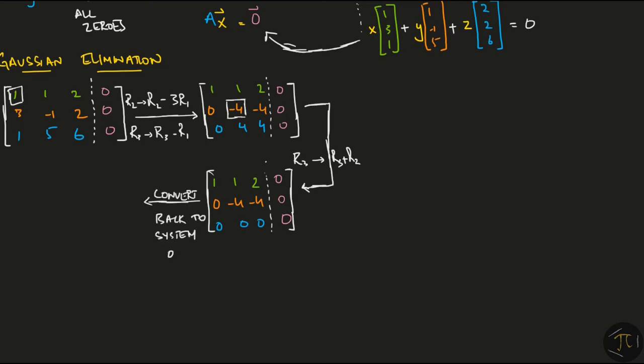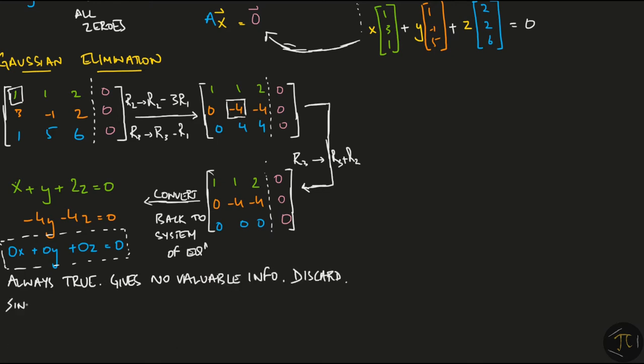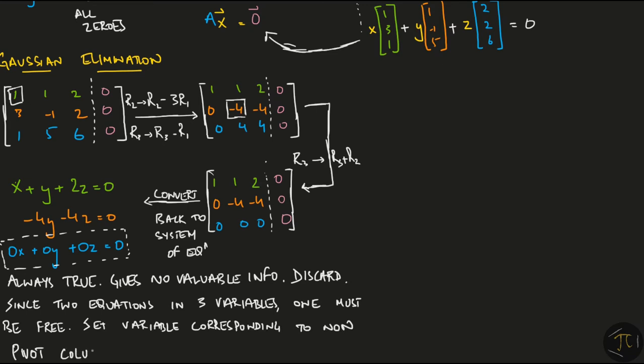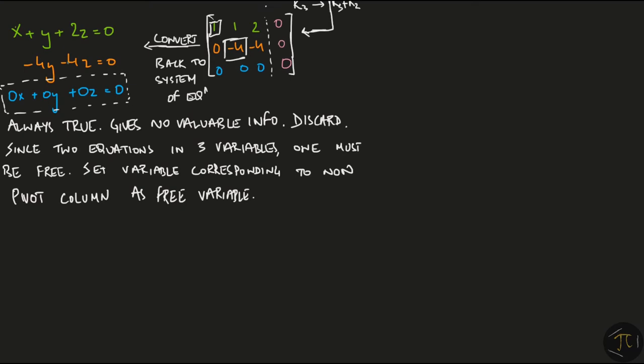Now convert back to the system of equations which gives us x plus y plus 2z equal to 0, minus 4y minus 4z equal to 0, and 0x plus 0y plus 0z equal to 0. This last equation is always true and gives no valuable information, so we discard it. Since we have two equations in three variables, at least one of the variables must be free. We set the variable corresponding to the non-pivot column as the free variable. The first two columns have pivots, the third one does not. So we set z equal to k, where k belongs to R, and solve x and y in terms of the constants. This is the solution set to the problem. In vector notation, we can write the same solution in this way.